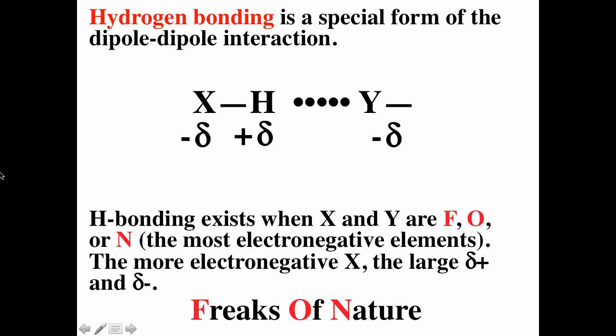Hydrogen bonding occurs when hydrogen is bound to fluorine, oxygen, or nitrogen — you can remember them as 'freaks of nature.' That's because fluorine, oxygen, and nitrogen have large electronegativities and are relatively small. Fluorine is the most electronegative element, oxygen is the second most, and nitrogen is the fourth most. Chlorine, which is more electronegative than nitrogen, is a bit larger, so we assume hydrogen bonding only occurs with fluorine, oxygen, or nitrogen.